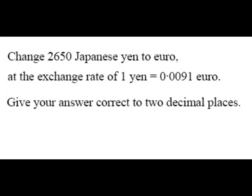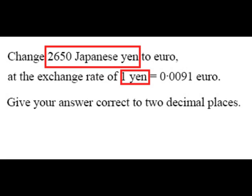Change 2650 Japanese yen to euro at the exchange rate of 1 yen equals 0.0091 euro. Give your answer correct to two decimal places. Here the one is in yen and we want to change yen — these currencies are the same, so we multiply.